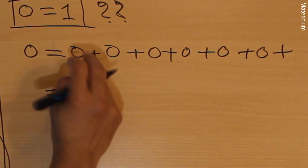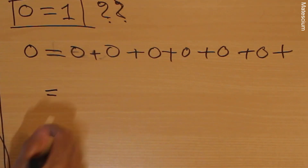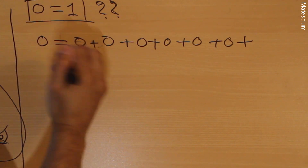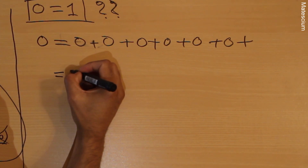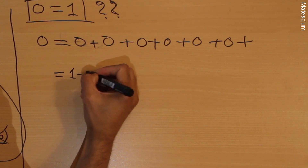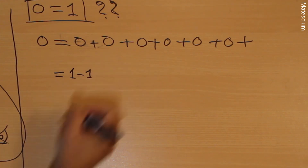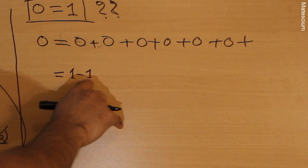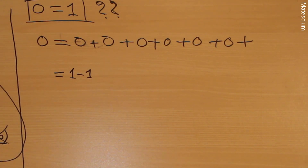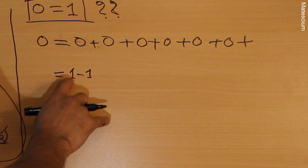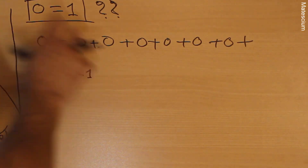I can rewrite the right-hand side in a different way. Each zero I can convert to one minus one. Is there any problem if I write one minus one equals zero? There is no problem, because according to mathematics, one minus one equals zero.